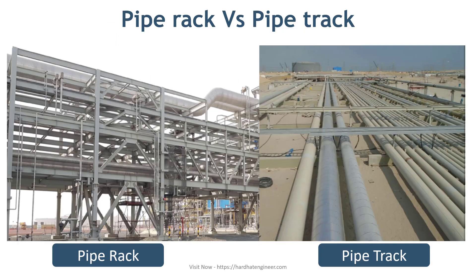Both pipe rack and pipe track are different. Here on the slide, you can see the same. Pipe tracks are ground or grade level pipe supports, which are also known as pipe slippers. In contrast, pipe racks are elevated steel or concrete structures. Refer to this image to see the difference between them.